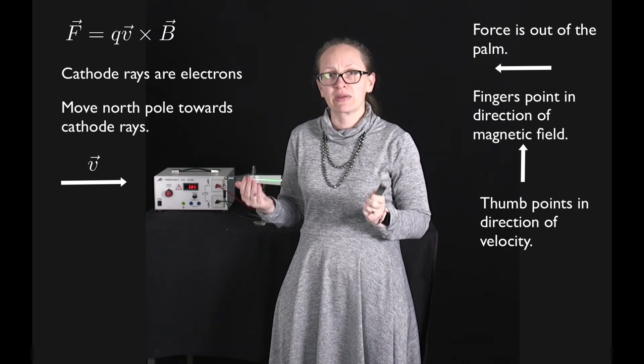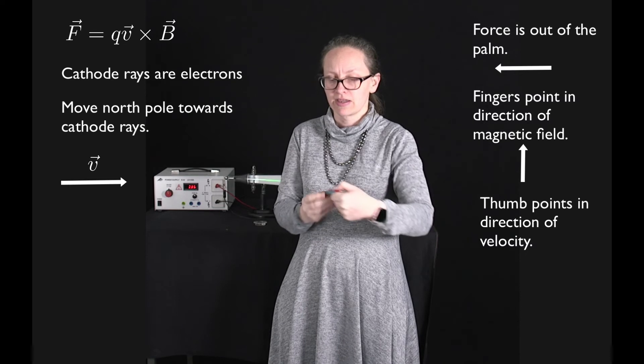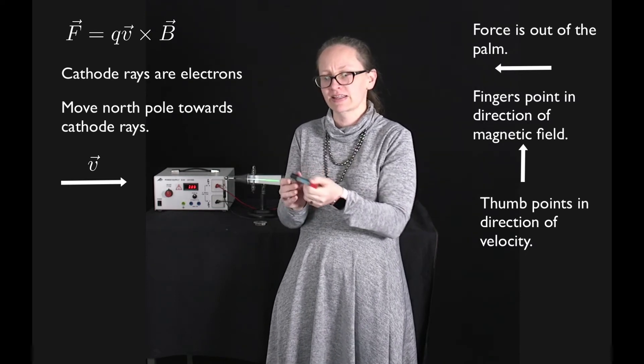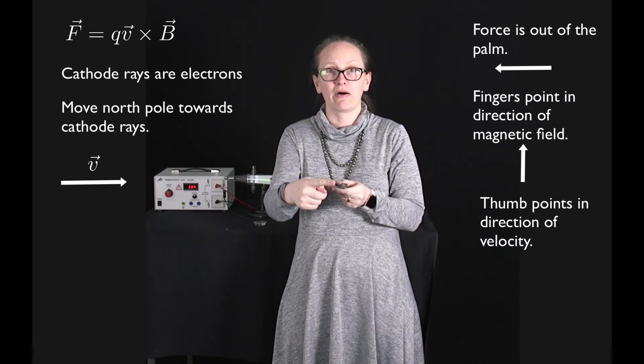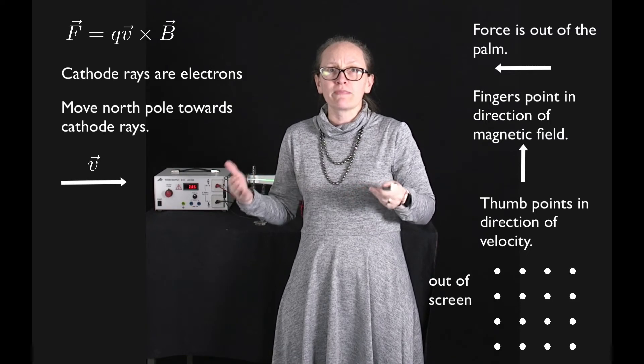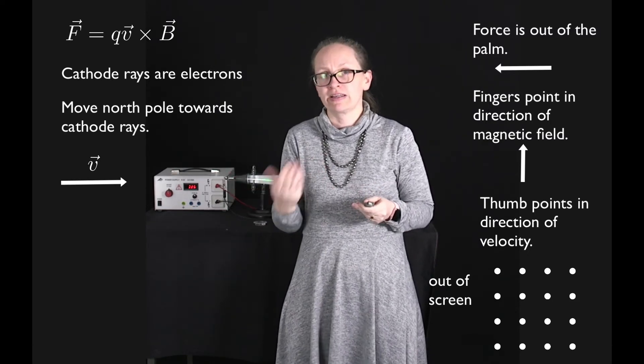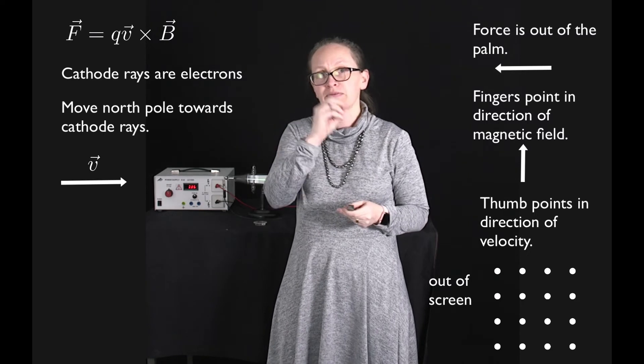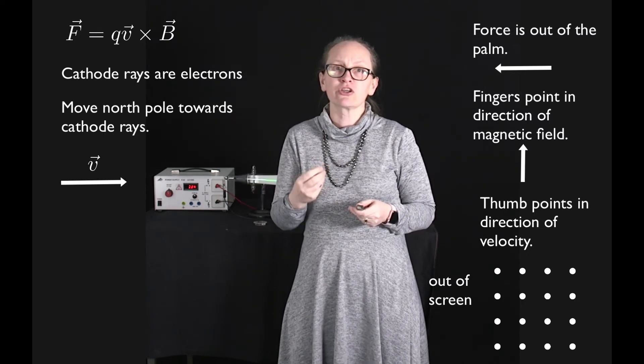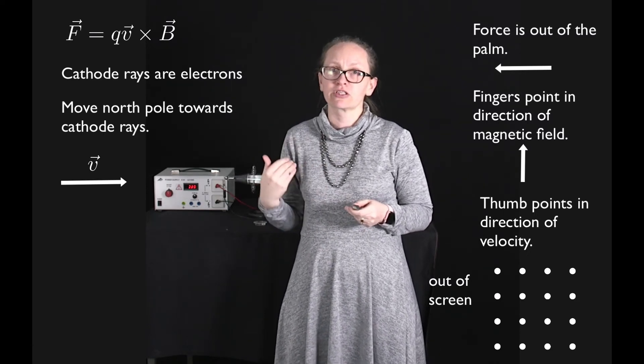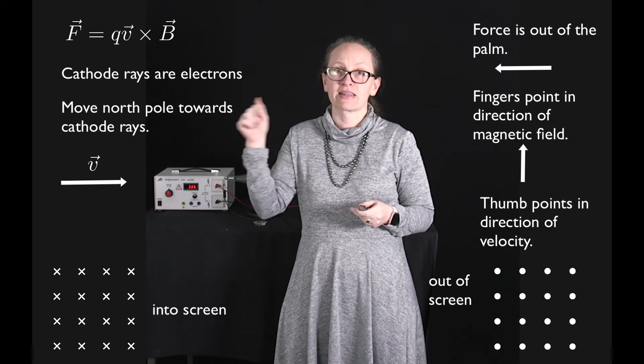So let's just think about how we can represent this. The magnetic field lines come out of a north pole. When we show magnetic field lines coming out of a screen or a page, we represent them with dots. When we show magnetic field lines going into a screen or a page, we represent them with crosses.